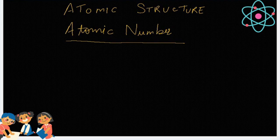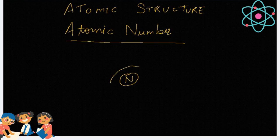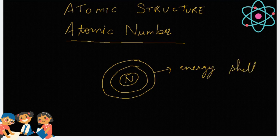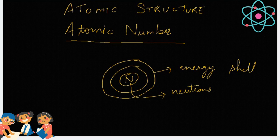Talking about the structure of atom, in the center we have nucleus and surrounding this nucleus are these circular orbits or we call them energy shells. So, to begin with, what does the nucleus comprise of? It comprises of neutrons and protons.